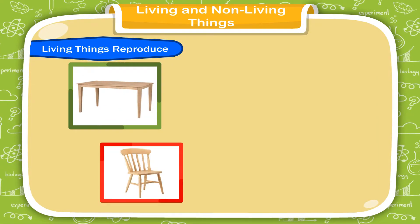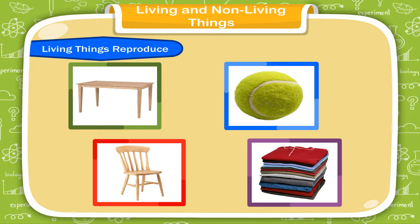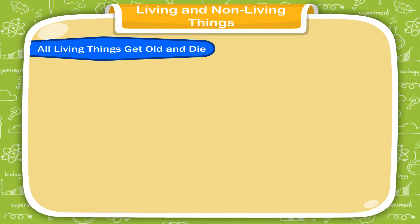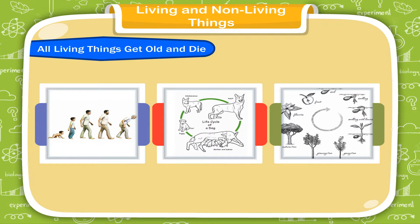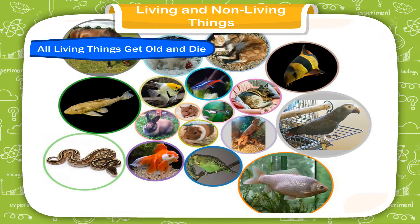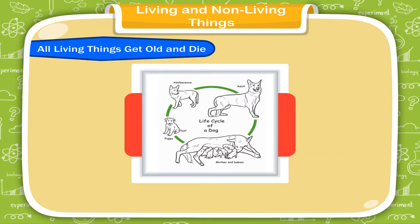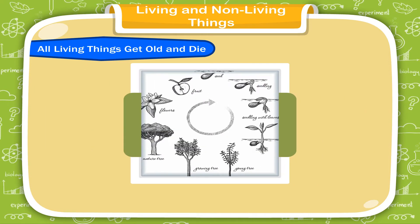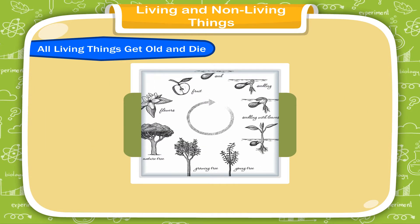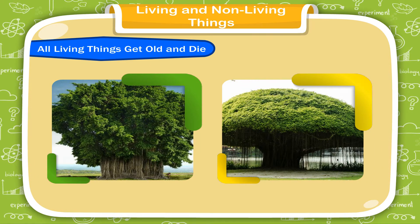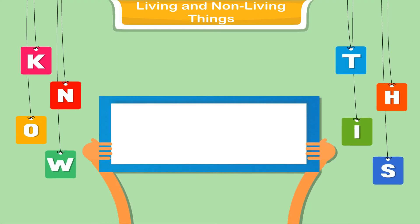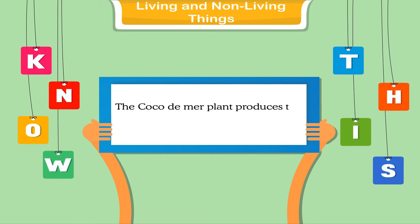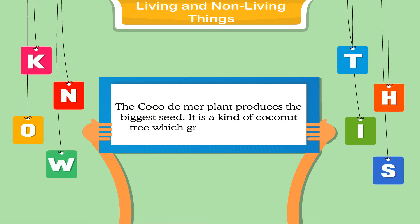Non-living things such as tables, chairs, balls or clothes do not reproduce at all. All living things get old and die. Humans, animals and plants live for a short or a long time — they all grow from babies, become old and finally die. Humans live for a long time, while different animals have different lifespans, such as a dog which lives for about 12 years. Non-living things do not have a life and so they do not grow and die. The Coco de Mer plant produces the biggest seed — it is a kind of coconut tree which grows in the Seychelles.